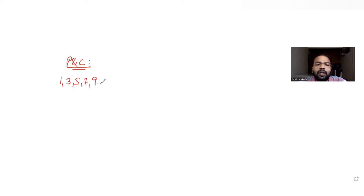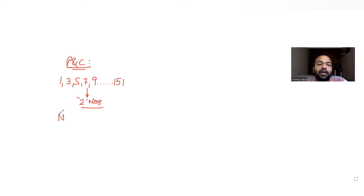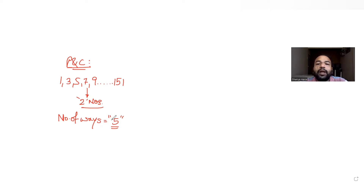Today's question is from the topic of permutations and combinations. We have been told that there is an entire list of odd numbers starting from 1, 3, 5, 7, 9, and this list goes up to 151. From this entire list of odd numbers, we have to select any two of them. The two numbers selected are multiplied together in all possible ways, and we have been asked to find the number of ways in which this product of two numbers will be a multiple of 5.